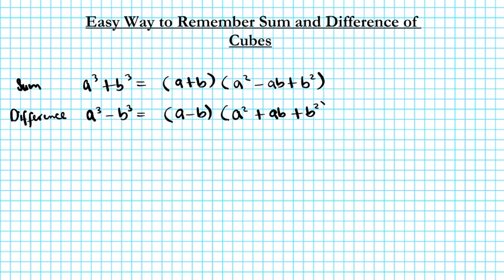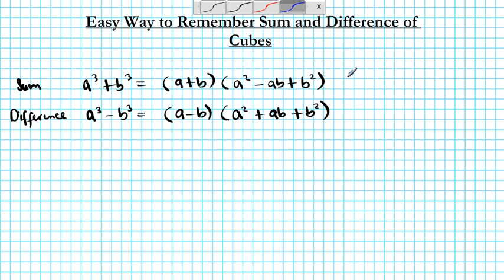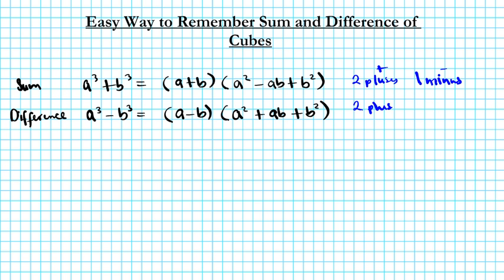Let's look at the pattern and observe how the signs behave. We have the two variables, the square of the first, the product of the two, and the square of the last. For the sum of cubes, if we count the signs, we have two pluses and one minus. For the difference of cubes, how many pluses do we have? We also have two pluses and one minus.